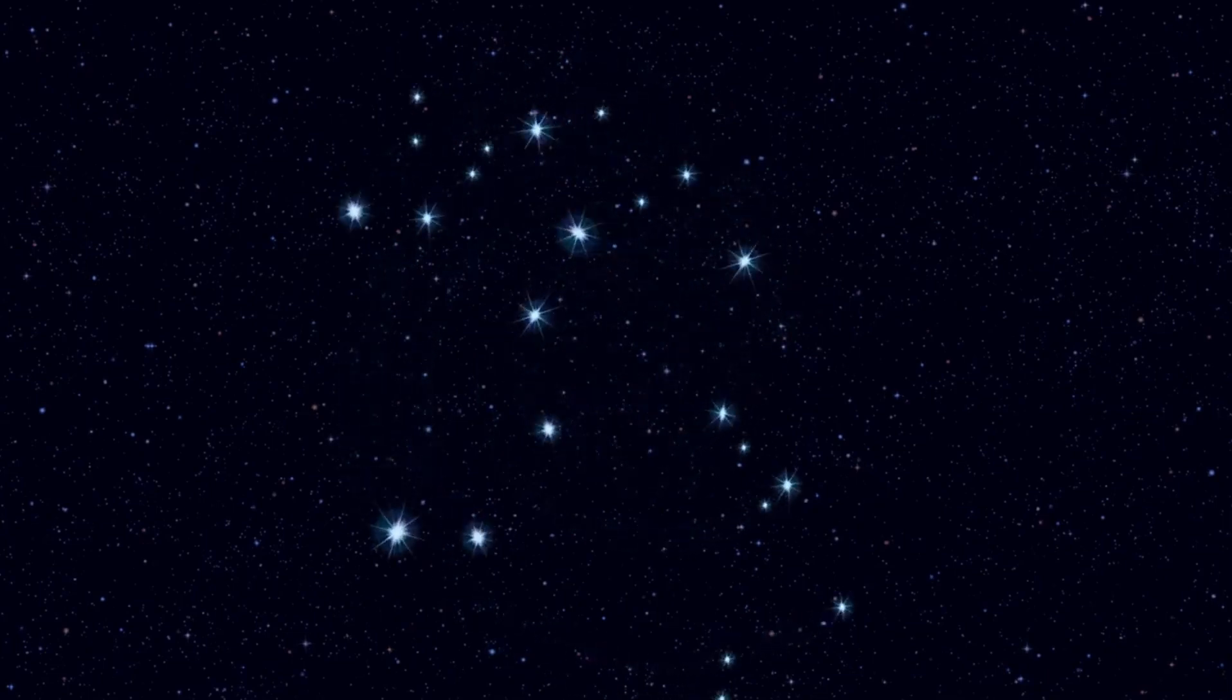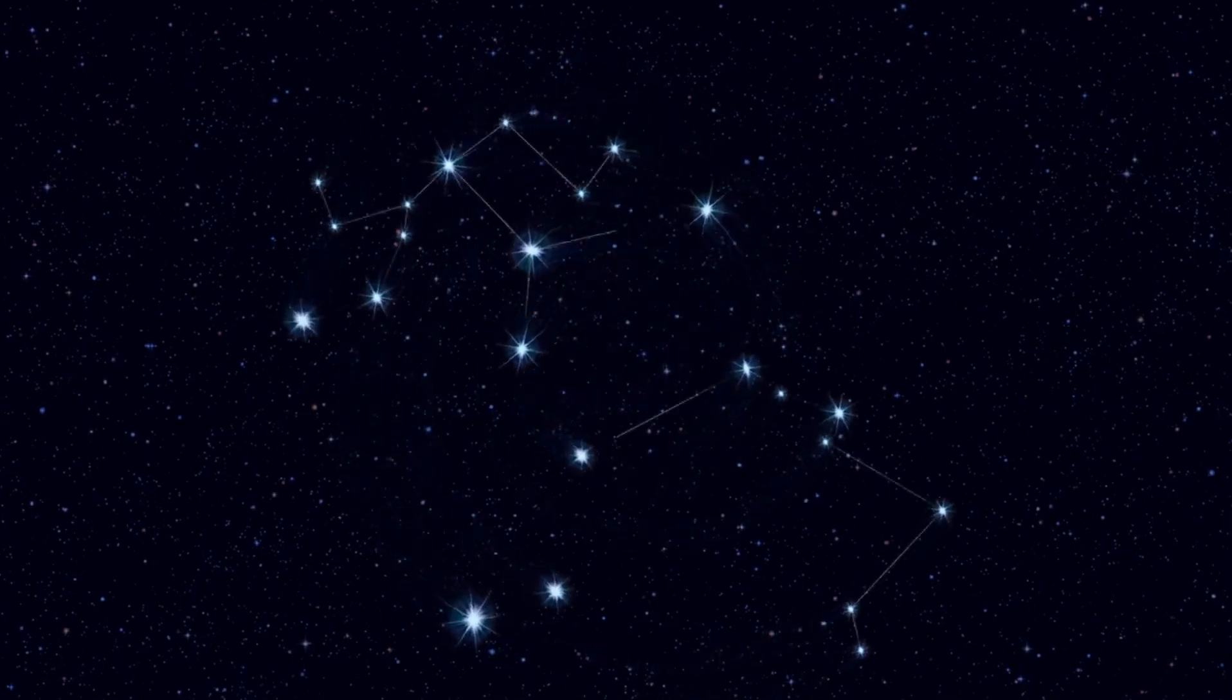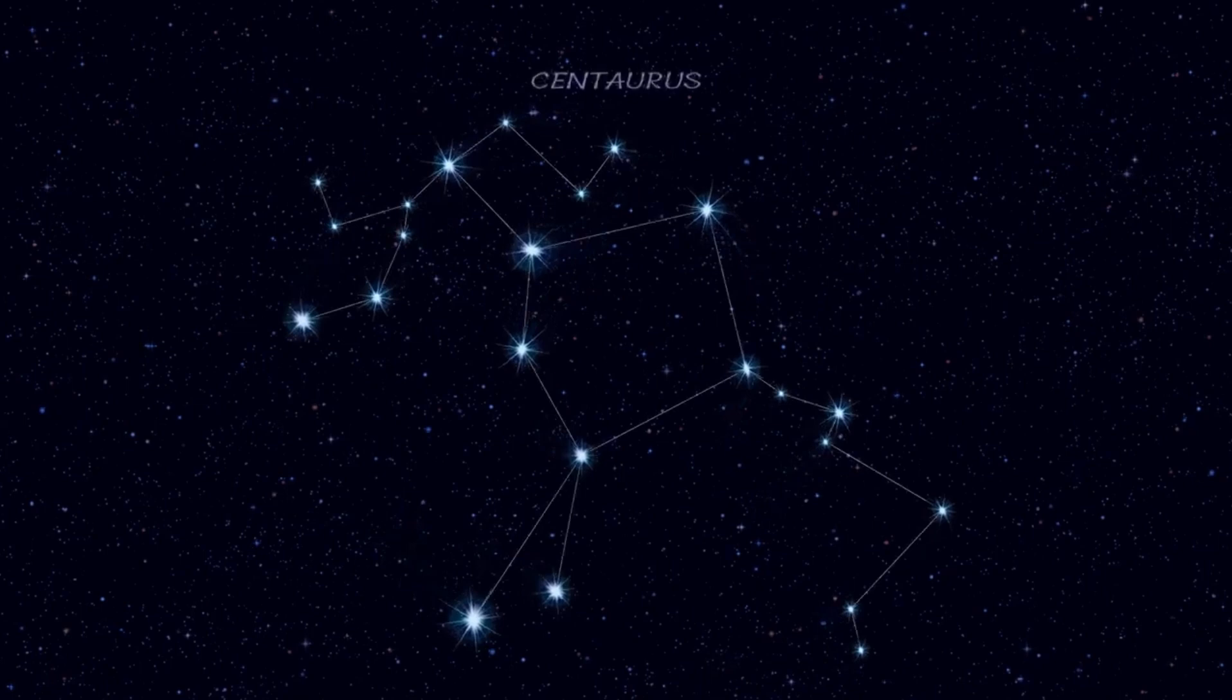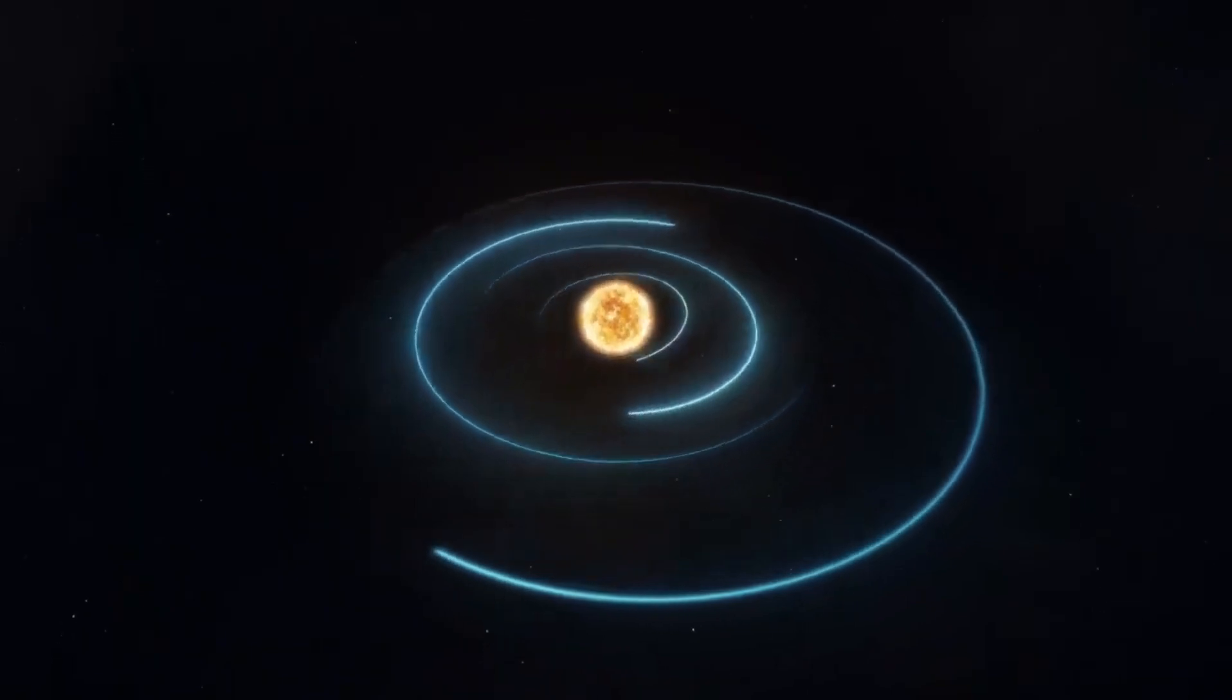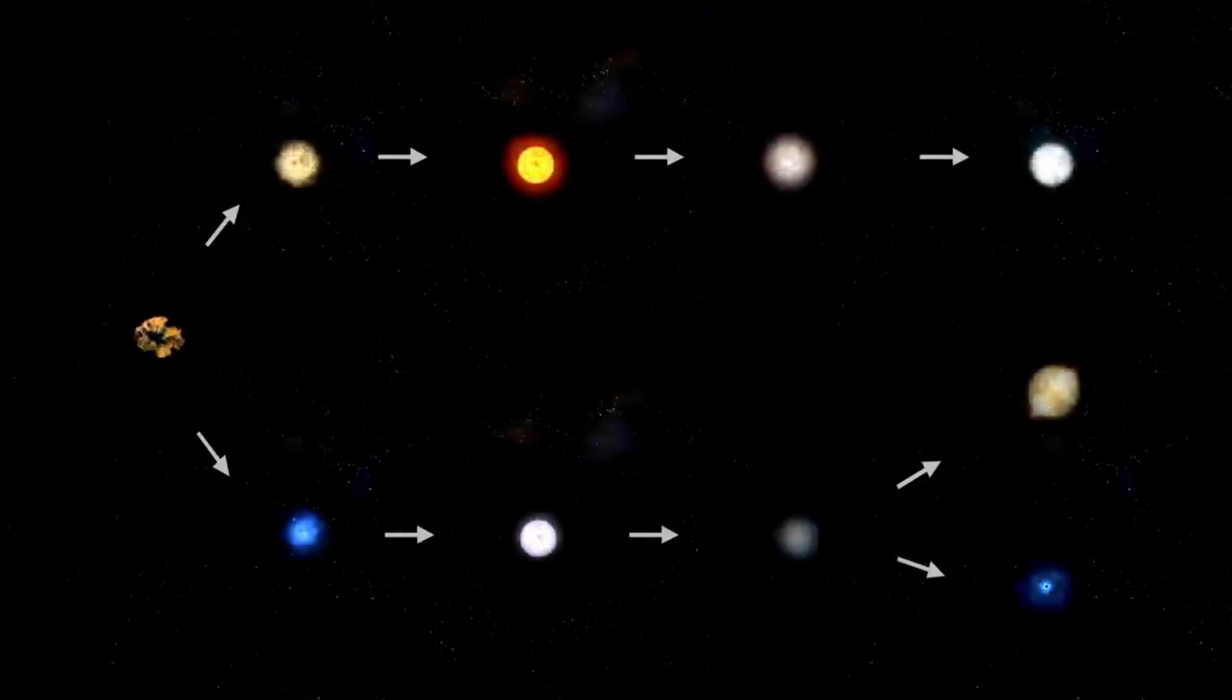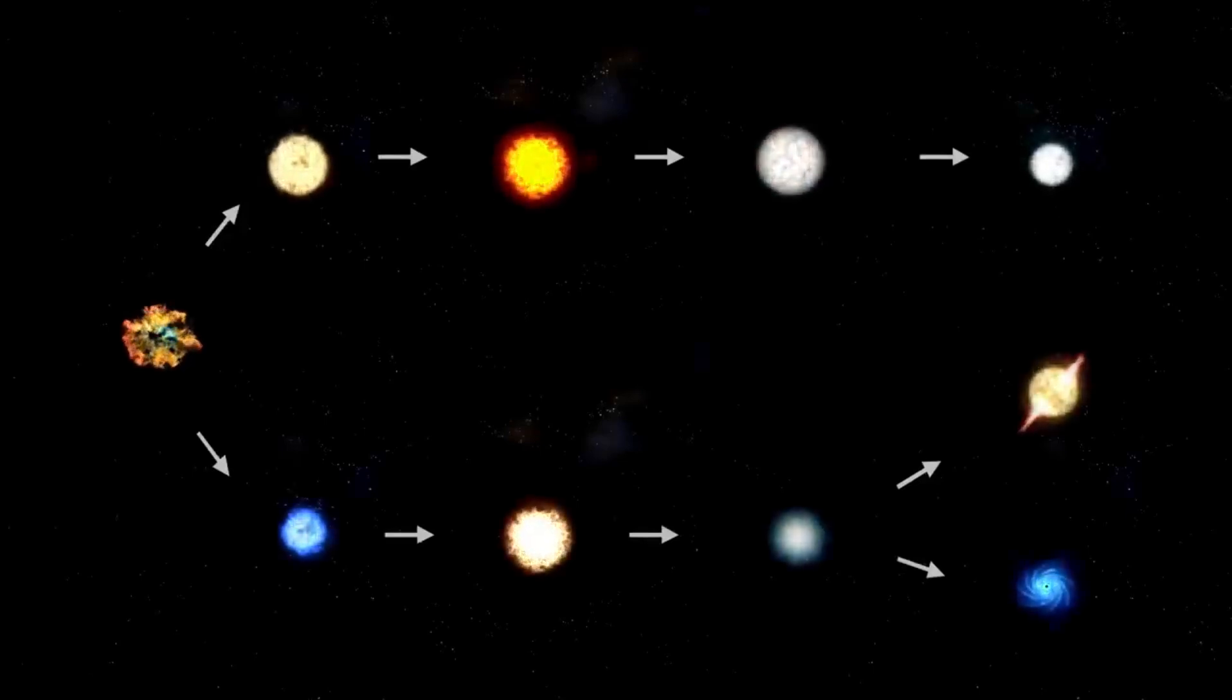Betelgeuse, the red supergiant star located on the shoulder of Orion the Hunter, has long captivated astronomers and stargazers alike. Known for its striking reddish hue and prominent position in one of the most recognizable constellations, Betelgeuse is a star that commands attention. But in recent years, this celestial giant has exhibited peculiar behavior that has sparked excitement and speculation among scientists and amateur astronomers.